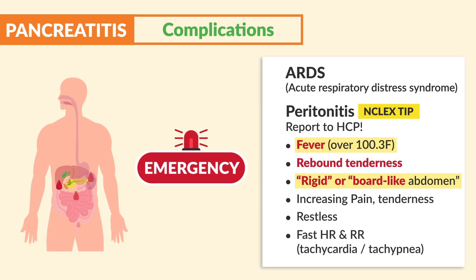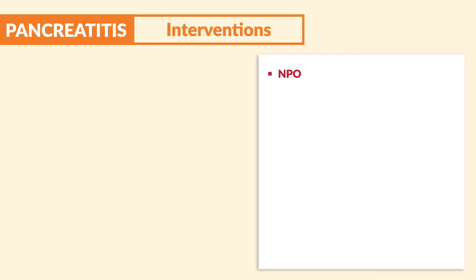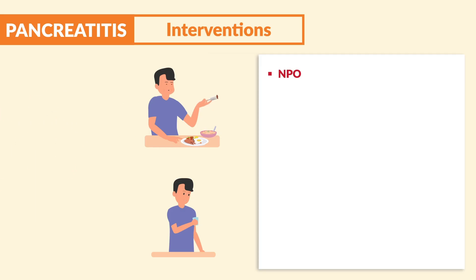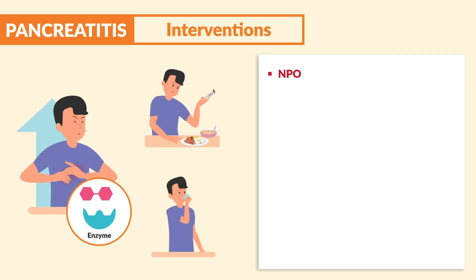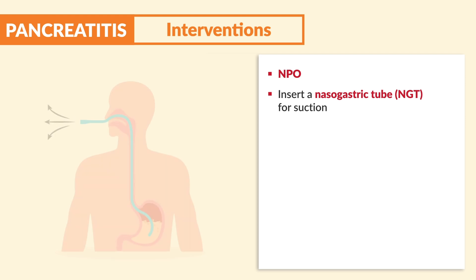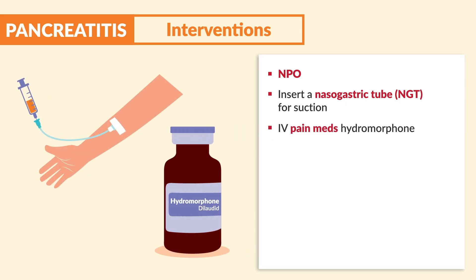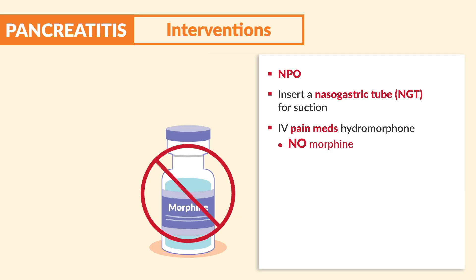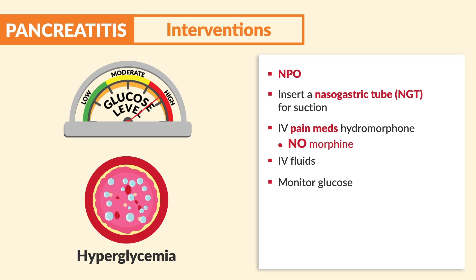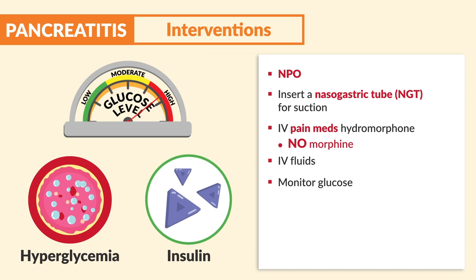In terms of interventions, we always put the patient on NPO — no eating, no drinking, nothing per oral for at least 24 hours — since eating and drinking stimulates more enzymes, leading to more pain and inflammation. Next, we insert a nasogastric tube for suctioning to achieve gastric decompression. We use IV pain meds like hydromorphone (brand name Dilaudid) — no morphine, as morphine can cause spasms inside the pancreas leading to more pain. We also use IV fluids and monitor glucose specifically for hyperglycemia, since the pancreas can't release insulin, and the patient may temporarily need insulin.